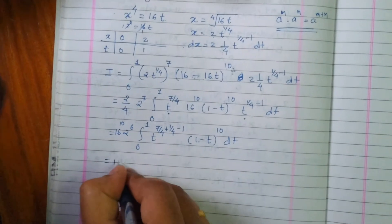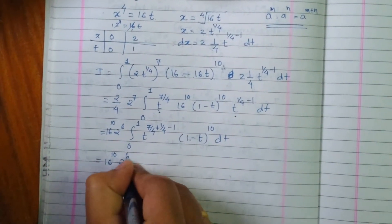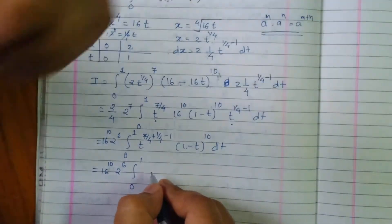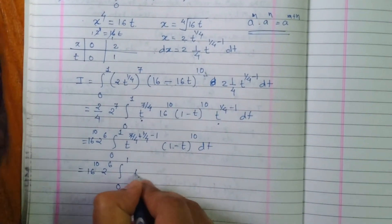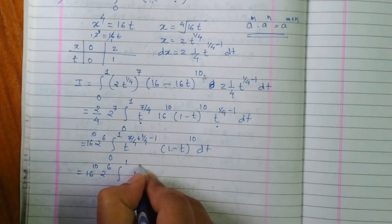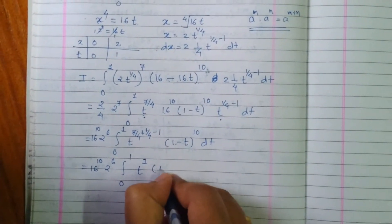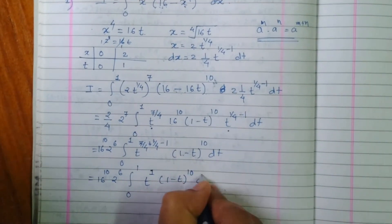So hence this is 16 raised to 10 times 2 raised to 6, integration from 0 to 1, 7 plus 1 that is 8 by 4, which is 2, and 2 minus 1 that is 1, times 1 minus t raised to 10, dt.